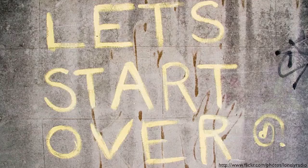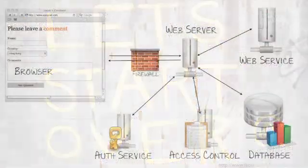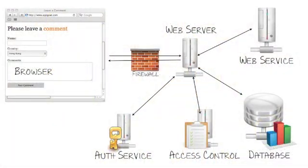In order to do this effectively, we need to start looking at our web applications the way that an attacker would look at the web application. We need to start seeing it through the eyes of the bad guys. So what flaws would they be aware of, or what flaws do we need to address?